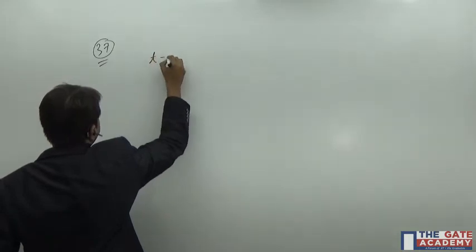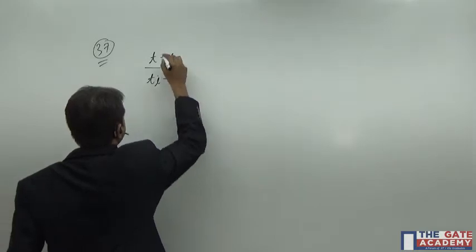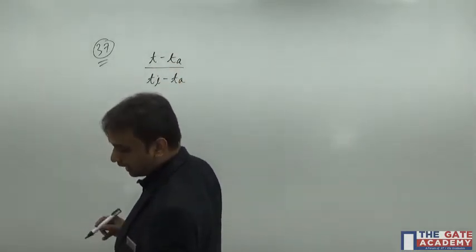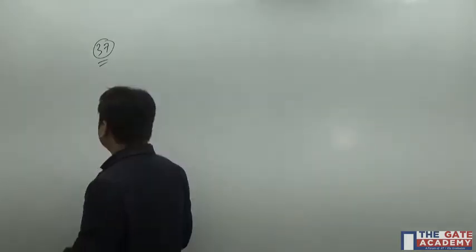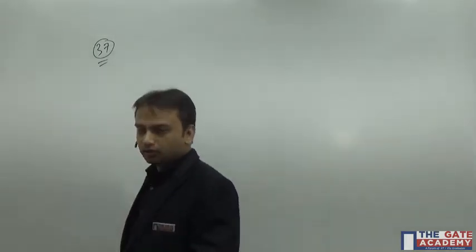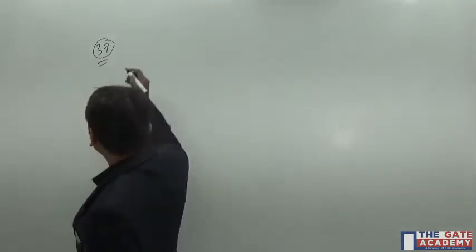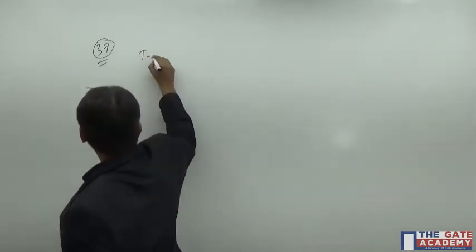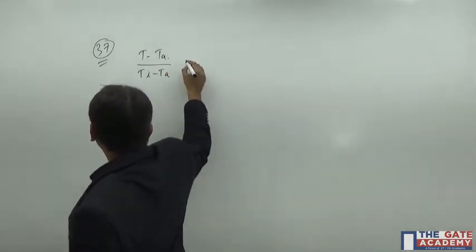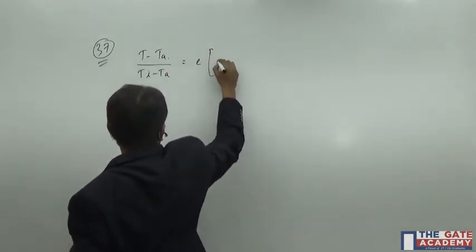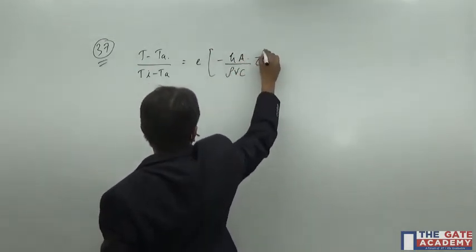It is T minus TA divided by Ti minus TA, where T is the temperature that you need to find out and TA is the temperature of the atmosphere. The equation for lumped parameter analysis is T minus TA divided by Ti minus TA equals exponential of minus H A by rho V C into tau.